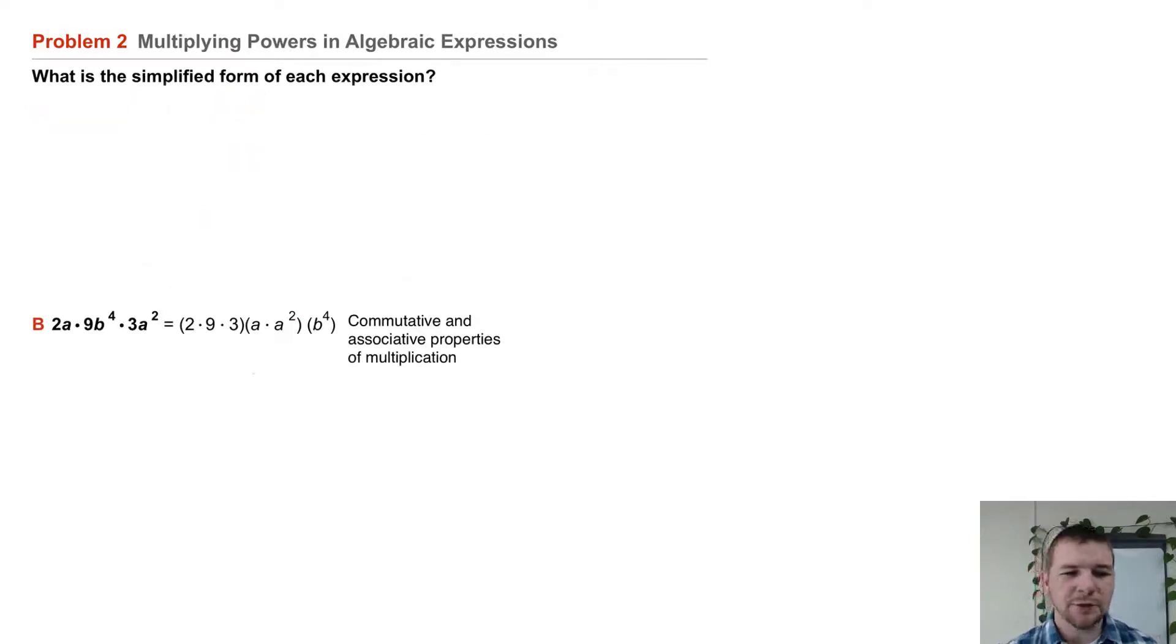Part b, 2a times 9b to the fourth times 3a squared. Again, it's probably simplest if we multiply our coefficients first, 2 times 9 times 3. Then we multiply our powers of a, a times a squared, then finally times b to the fourth.